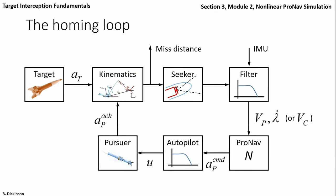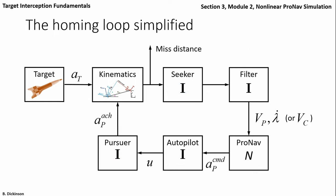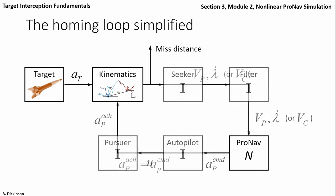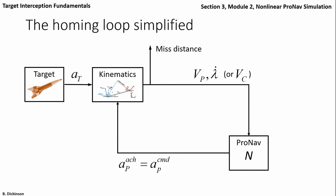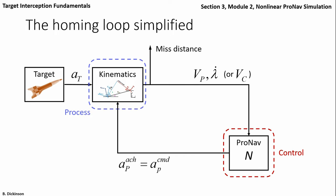Here's the homing loop from last time. We want to understand proportional navigation without the complexities of the other systems in the loop. So first we're going to simplify and set the seeker, filter, autopilot, and pursuer to identity. Ultimately all we're looking at in the homing loop is the relationship between the kinematics and the proportional navigation law. The kinematics becomes the process, the pronav becomes the feedback control law, the target is a disturbance, and a measure of merit is missed distance evaluated at some final time.